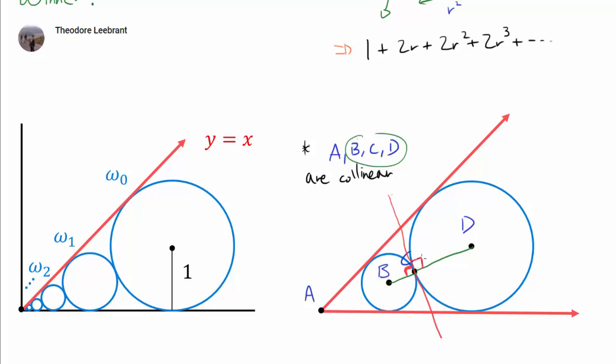And using the same reasoning, this is 90 degrees, meaning that this angle is 180. So B, C and D are indeed collinear.